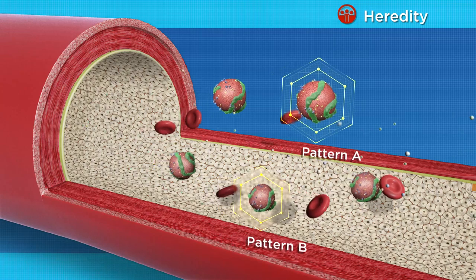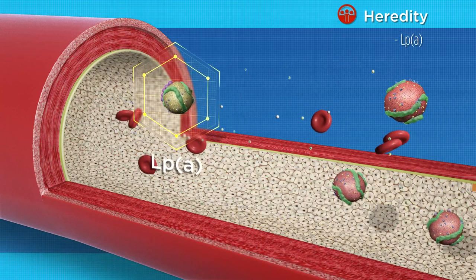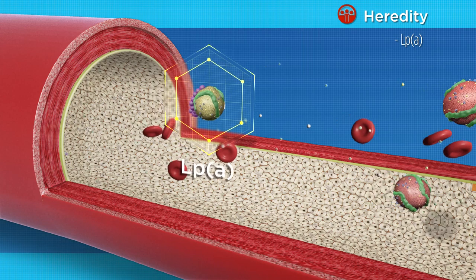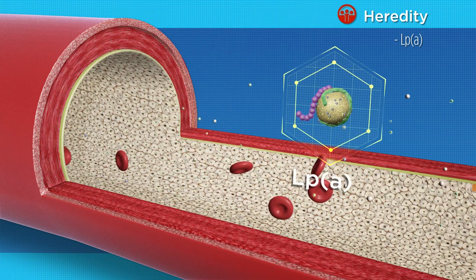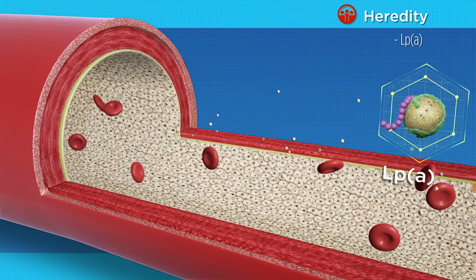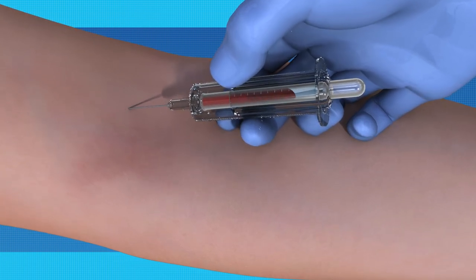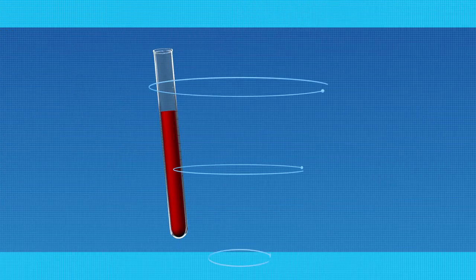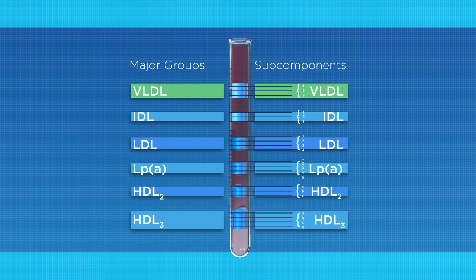In the heredity category, the VAP Plus measures lipoprotein LpA, a risk factor that has been associated with two times greater cardiovascular risk. In order to look at the three categories of risk, VAP Plus uses ultracentrifugation to separate each of the component particles in the blood, allowing the direct measurement of each component for the most accurate picture.